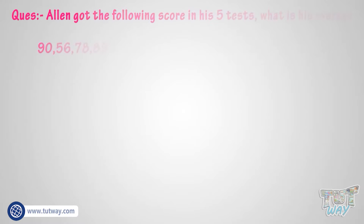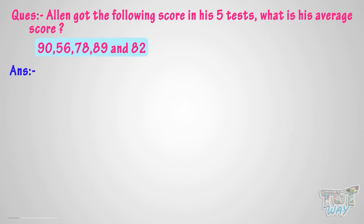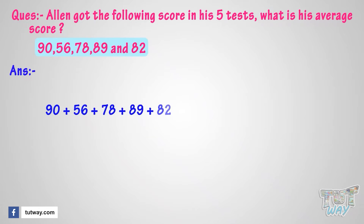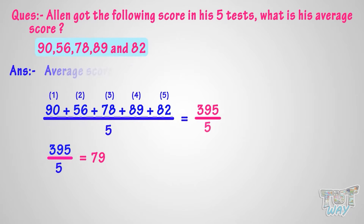Alan got the following scores in his five tests. What is his average score? We know we find average by adding up all the scores and dividing by the number of scores. Adding up all the scores, we get 395. There are five subjects, so divide 395 by 5 and we get 79. So Alan's average score is 79.